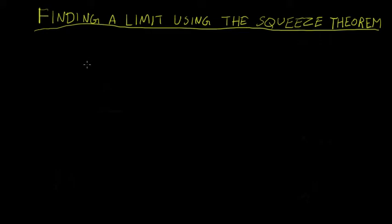In this video, I'll be working another example of finding a limit using the squeeze theorem. The limit we'll be looking at is the limit as x tends to 0 of x squared times the cosine of 3 over x.